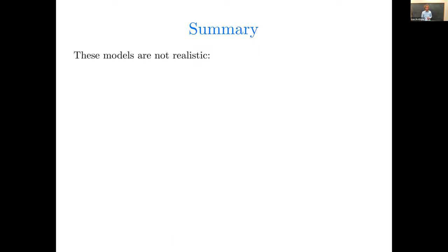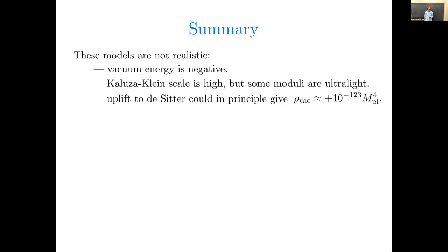Okay, so that's the overall summary. Now, in terms of physics implications, these models are just not realistic. The vacuum energy is negative. Supersymmetry is unbroken. And although the Kaluza-Klein scale is high, some of the moduli are ultralight. So even if we had gone to the trouble of uplifting these models to de Sitter space, which one could in principle do, you could then find a vacuum energy of order the observed value, plus 10 to the minus 123 in Planck to the fourth in de Sitter space. But in such a model, the moduli masses and the gravitino mass would be the present day Hubble scale or smaller.